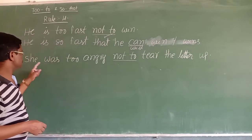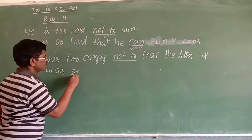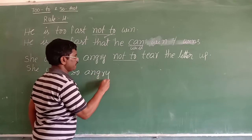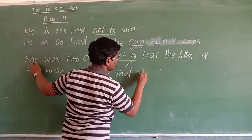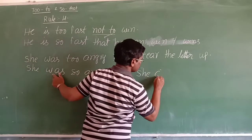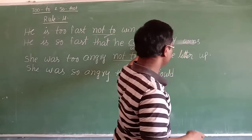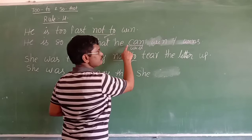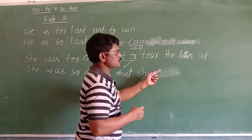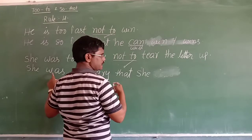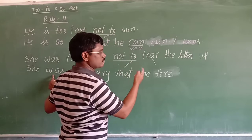Another sentence: 'She was too angry not to...' She was — 'too' changes to 'so' — angry — 'to' changes to 'that' — subject 'she'. Here the verb is 'was' (past tense), so we write past tense. Because it is a negative infinitive, we write a positive result. We may write 'could' + verb 1 directly, or since 'was' is past, we write verb 2. The rule is: when the main clause is in past tense, the subordinate clause should also be in past tense.